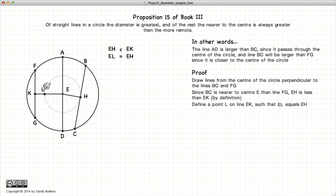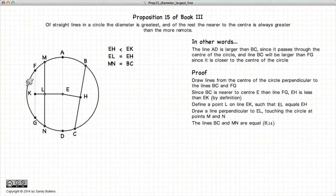We will define a point L such that EH is equal to EL. Draw a line perpendicular to EL and where it intersects the circle is M and N.